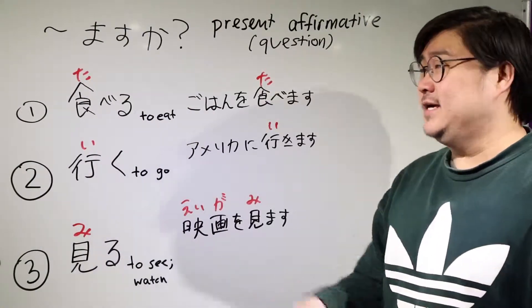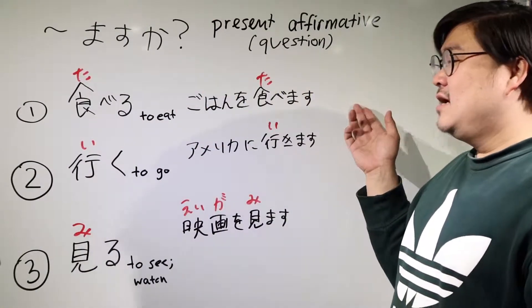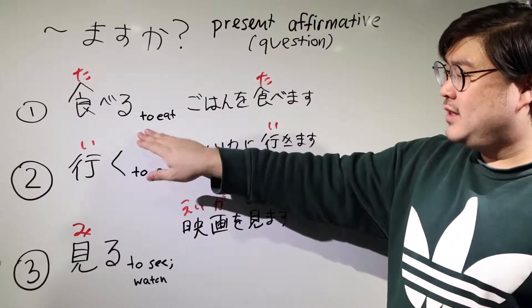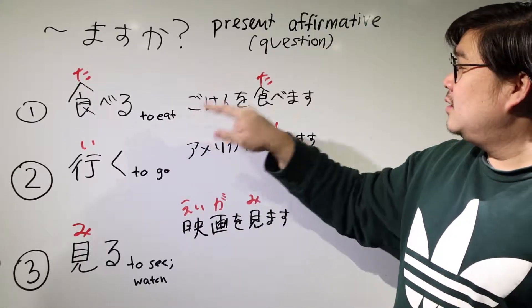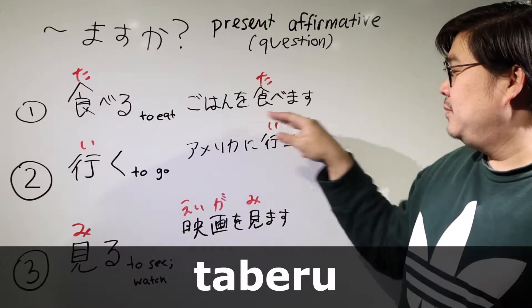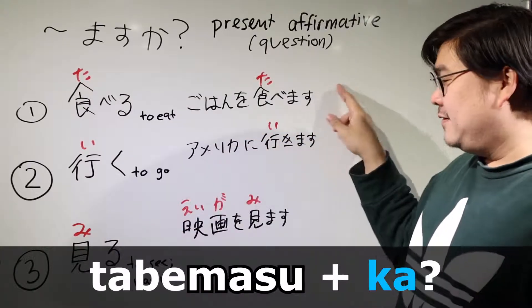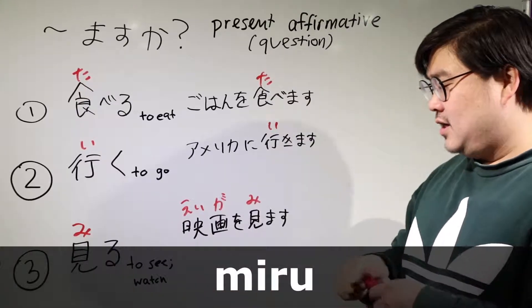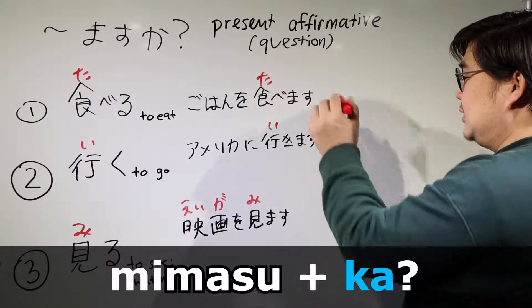So the speech pattern today is masuka. In Japanese when you ask a question, it's really simple to make this. All you have to do is conjugate it to the polite present form and then add the ka. So taberu would be tabemasu and then you add the ka, iku becomes ikimasu and then you add the ka, miru becomes mimasu, so all you do is add the ka.